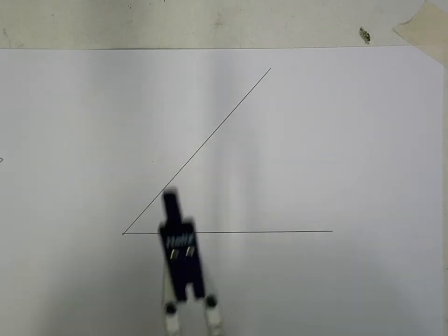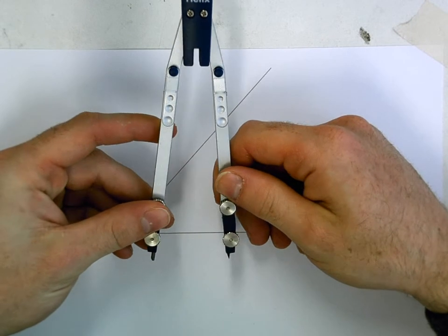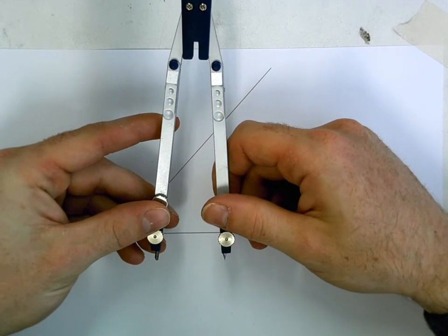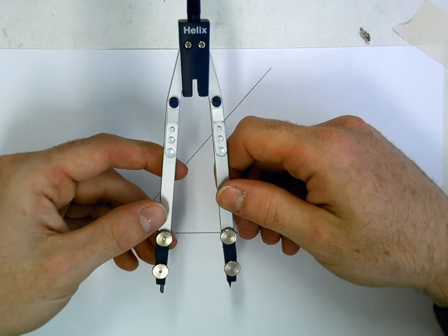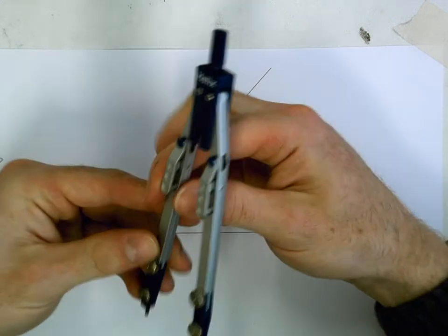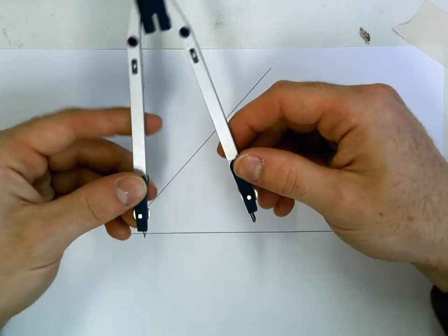To bisect an angle, we use a compass and set it to any measurement. Once you choose that measurement, you have to stick with it. The larger you set your radius on your compass, the more accurate your construction will be, so don't have it really tight—bring it out as far as you can, but keep it a reasonable size.